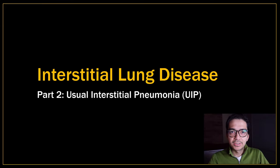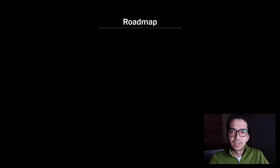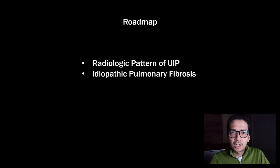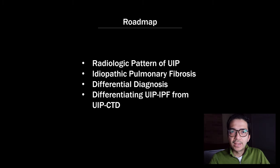Hey everybody, this is Rishi and this is going to be the second video in my series on interstitial lung disease. Today we're going to be talking about UIP. This is the roadmap for today: first I'm going to talk about the radiologic pattern of UIP, then briefly about IPF, then the differential diagnosis, and then how to differentiate UIP-IPF from UIP due to connective tissue disease.